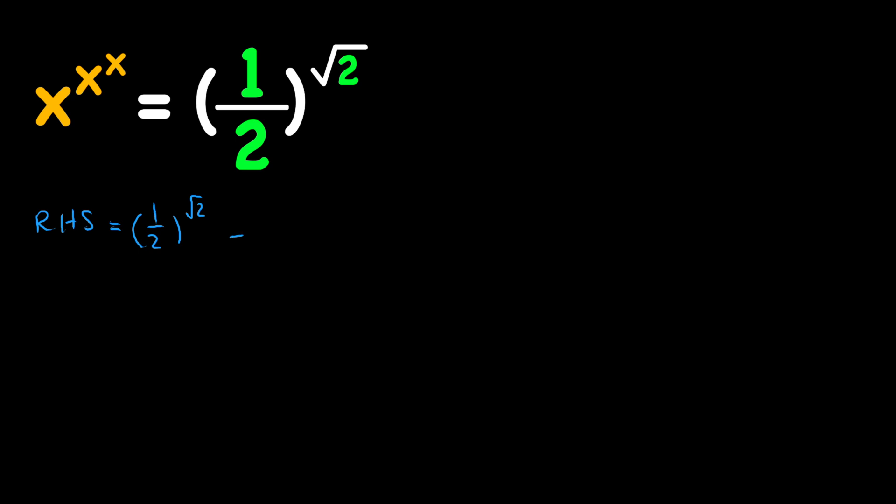So first of all, let's go ahead and replace square root of two with two over square root of two. Because two over square root of two is equal to square root of two all squared over square root of two, which gives us square root of two. I just wrote this to clarify.